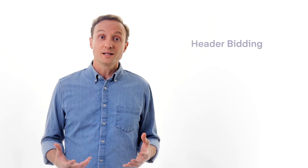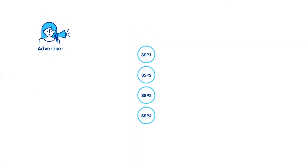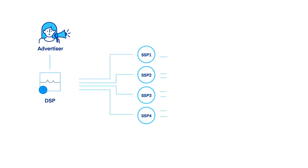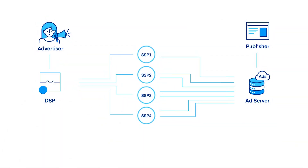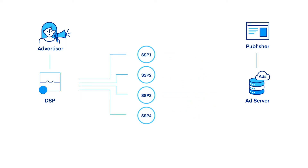So a new thing came along called header bidding. What header bidding created was competition amongst SSPs for the same impression, and it placed the SSPs upstream from the ad server so that they could conduct their auctions before passing those values into the ad server. That was great for publishers because it increased the volume of demand for every single impression. But it was also really good for demand-side platforms because for the first time ever, we now had choice as to where we could transact any given impression.